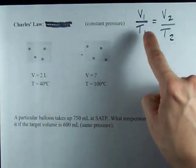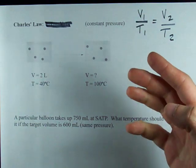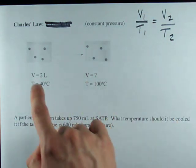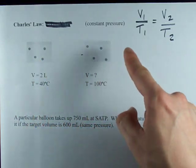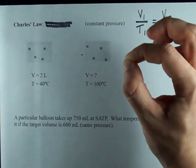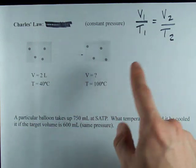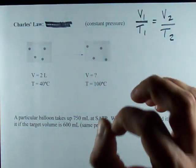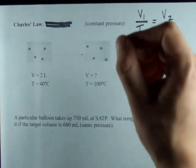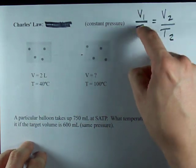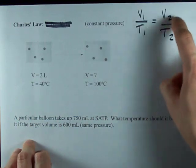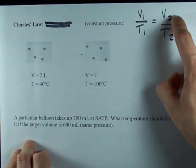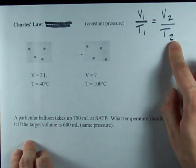Charles' Law is the idea that volume and temperature are related to each other as long as you expand or heat the gas at a constant pressure. What I mean is volume and temperature are directly proportional to each other. V1 over T1, initial volume over initial temperature, is the same as second volume or final volume over final temperature.